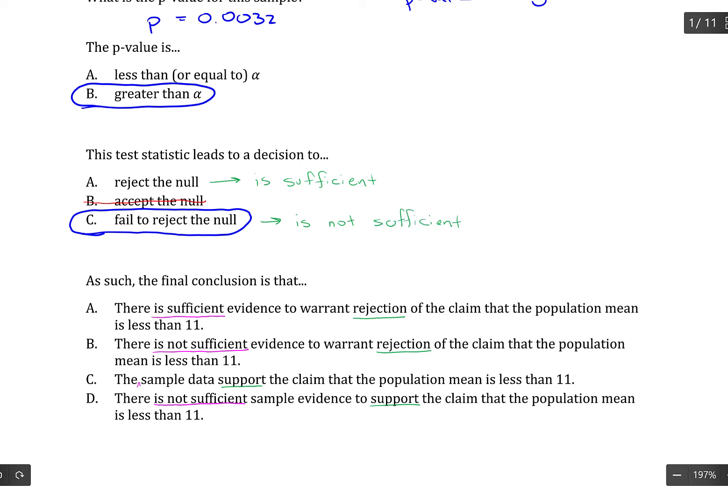And if you fail to reject the null hypothesis, you're going to use is not sufficient. All right. Since we failed to reject the null, we're checking is not sufficient. So anything with is sufficient is going to be thrown out in this case. And I think that safely throws out C as well. So that leaves either B or D for us.